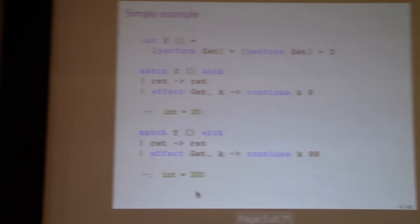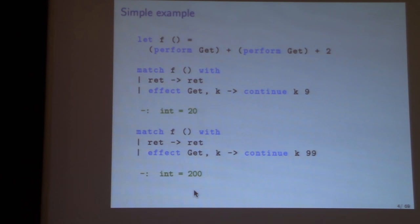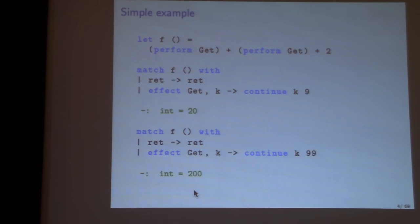The easiest way to think about algebraic effects and their runtime semantics is like exceptions that you can restart. There are two operations: perform, and an extension of the match construct for handling them. Perform is a bit like raise, and the handler is a bit like an exception handler. This example function performs the get operation, adds it to performing get again, and adds two.